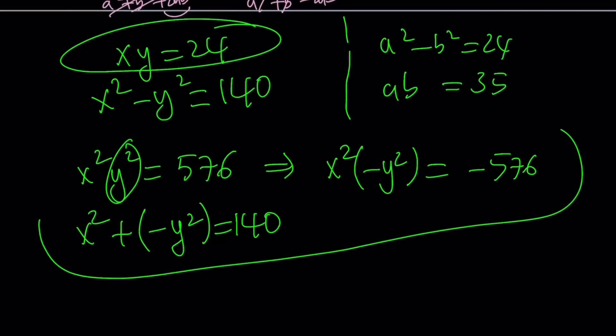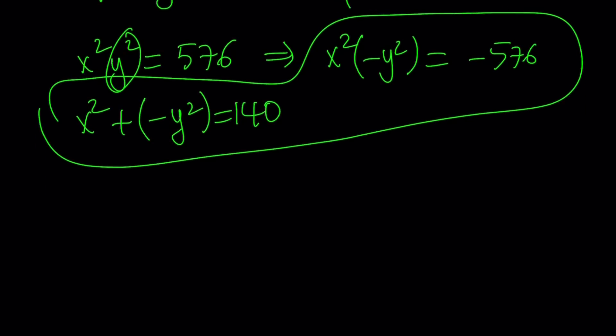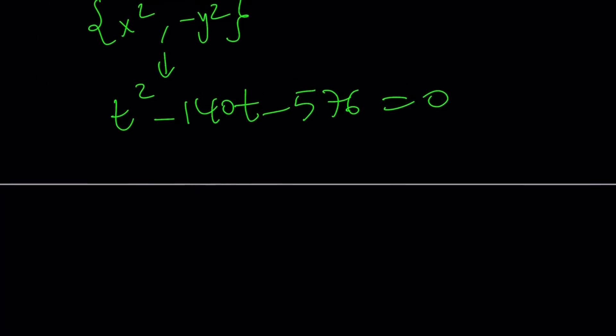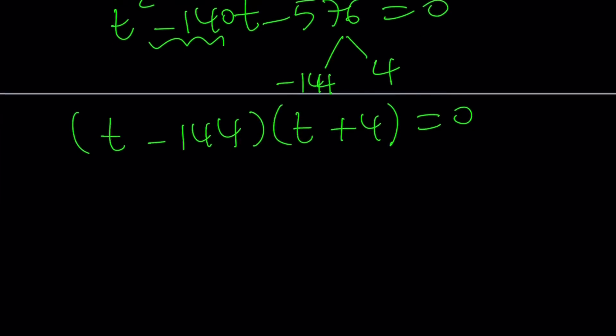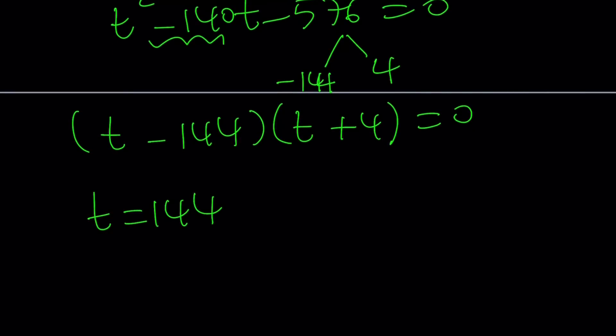I want to form the quadratic equation whose roots are x squared and negative y squared. Let's multiply both sides by negative one, and that's going to be negative 576. These two give me the sum and the product of the roots. So by using Vietta's formulas, by the way I have a lecture video on it, we can write the equation whose roots are x squared and negative y squared: t squared minus 140t minus 576 equals zero. We're looking for two numbers whose product is negative 576 and whose sum is negative 140. Those numbers are negative 144 and positive 4, so we can write this as t minus 144 times t plus 4 equals zero. From here, t equals 144 or t equals negative 4.